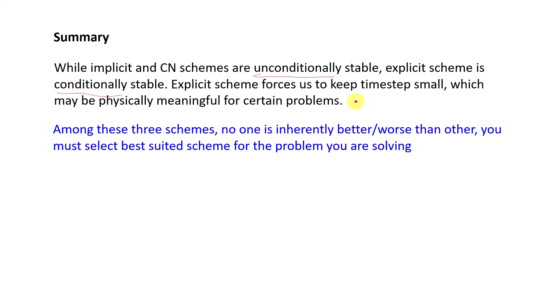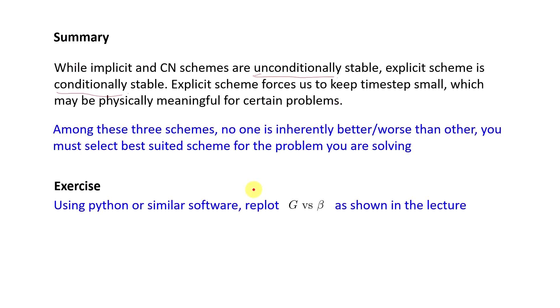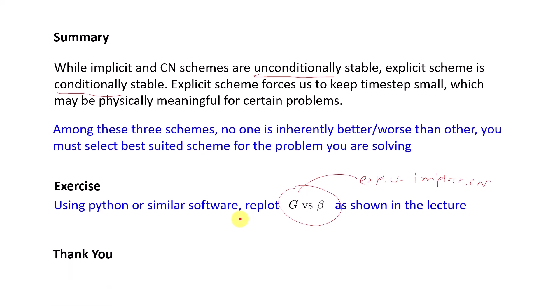Overall, implicit and Crank-Nicholson are unconditionally stable while explicit is only conditionally stable. It is tempting to label one scheme as good and another as bad, but there is no such bulletproof rule. Depending on the problem you are solving, you must select a proper scheme. As an exercise, re-plot g versus β for all three schemes on the same plot using Python or similar software. That is all for this lecture — thank you and see you in the next class.